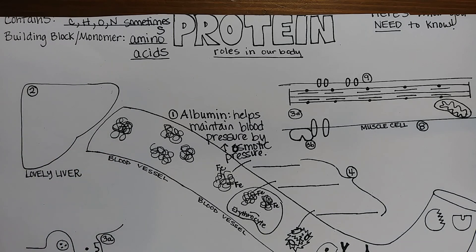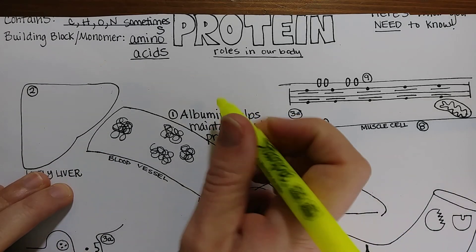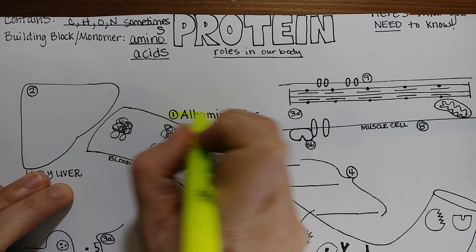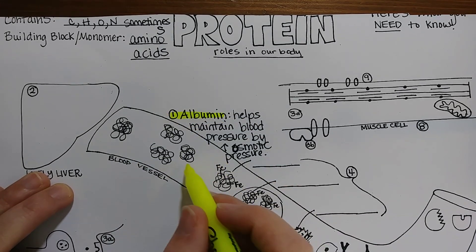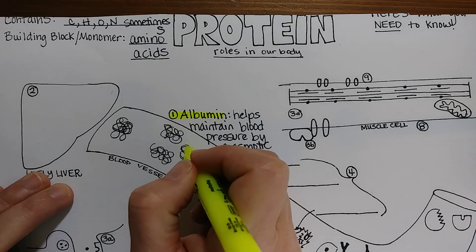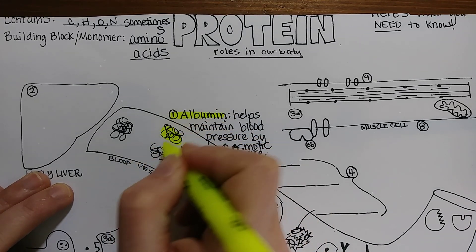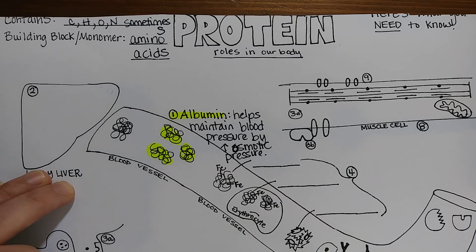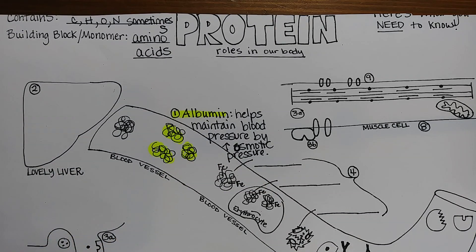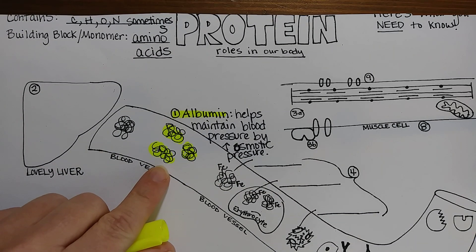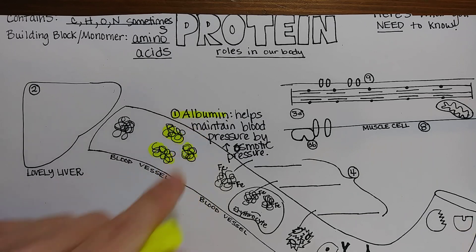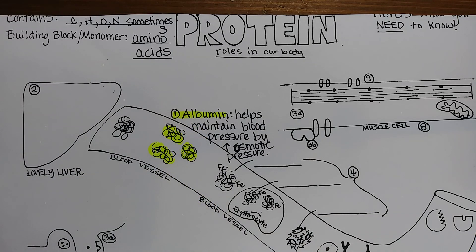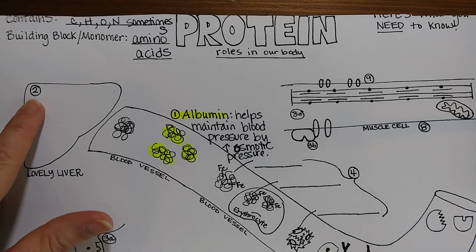We can highlight albumin in yellow, and you can see in the blood vessel there are some globular proteins of albumin. Not surprisingly, the liver makes albumin. Virtually all of the proteins that we have in our blood are made by the liver.